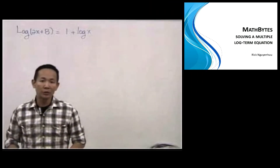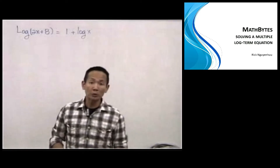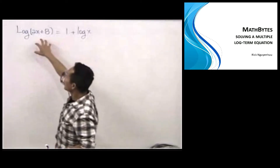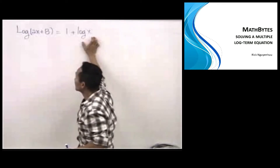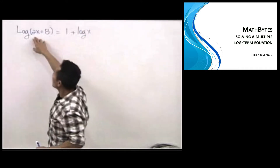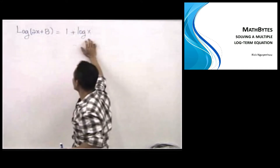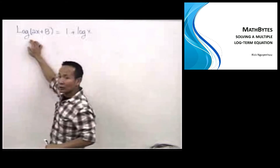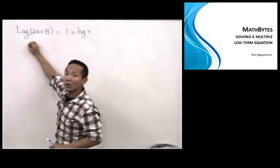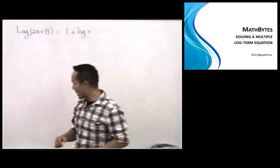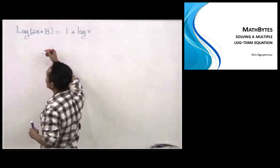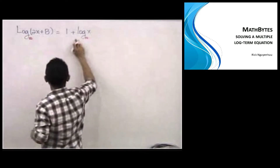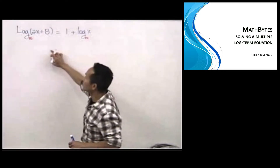Today I will show you how to solve a multiple log term equation. I have one log term over here and another log term over here — a log of the quantity 2x plus 8, and a log of x. If you see no base attached to a log, we know that is a common log. A common log is log of base 10. You can attach the base in — a common log has an invisible base of 10.